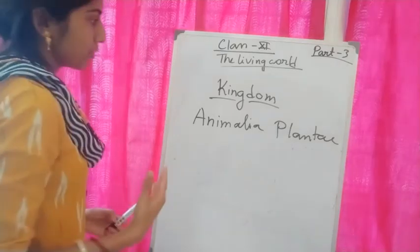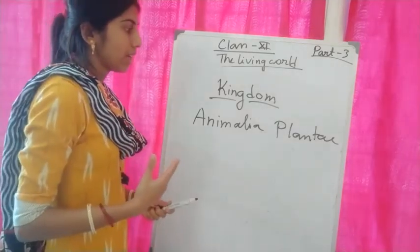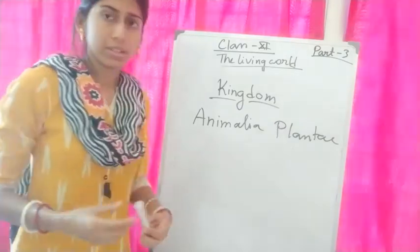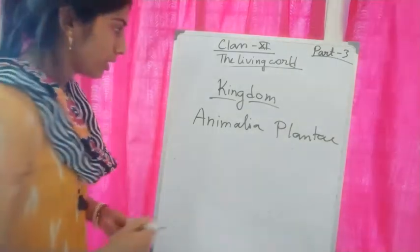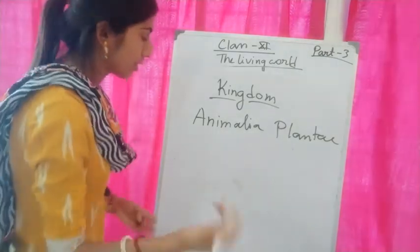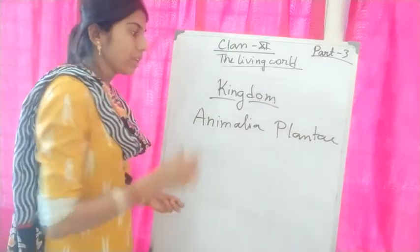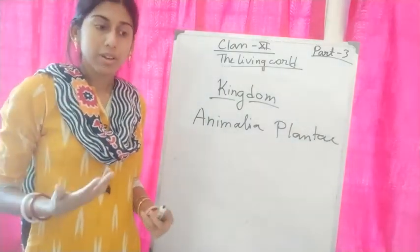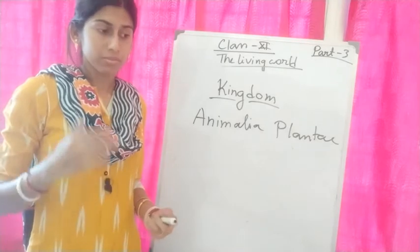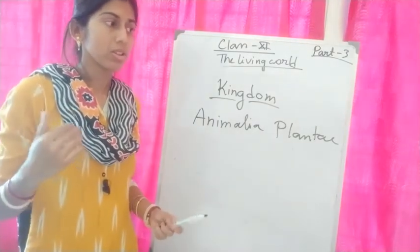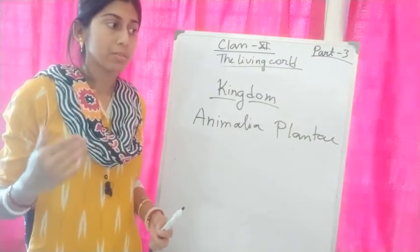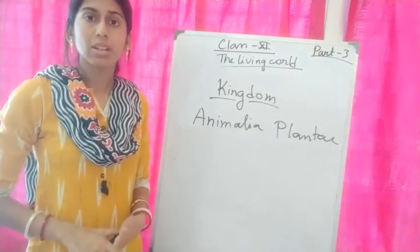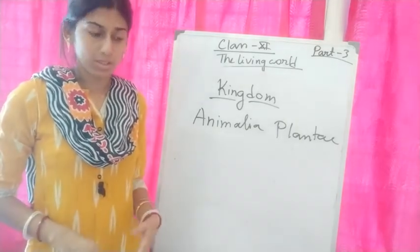In our classification system, we have a five kingdom classification system, which we will read about in the next chapter. All organisms — animals, plants, or any other organisms around us — are grouped into five kingdoms.